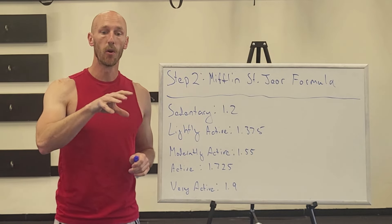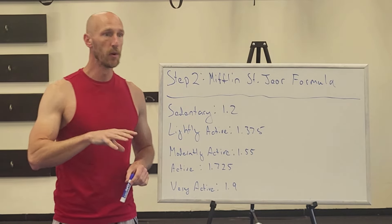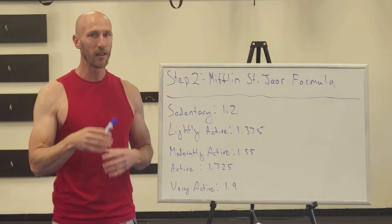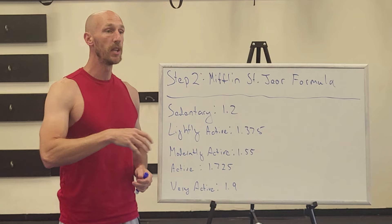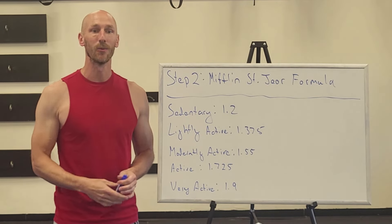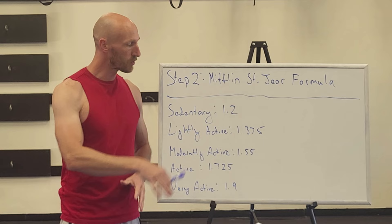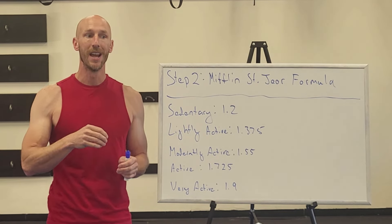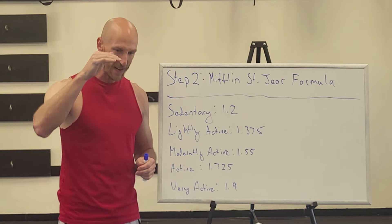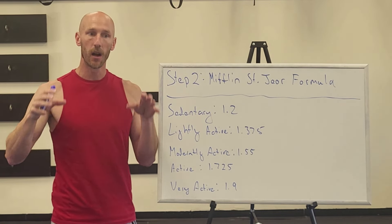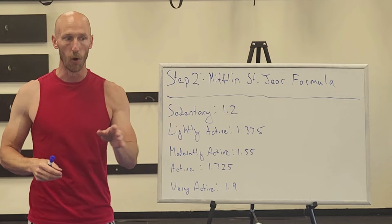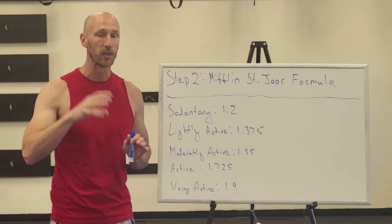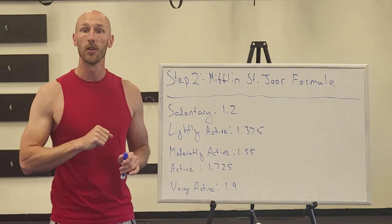We multiply that by our BMR and then we know our personal total daily energy expenditure. We're not going to burn the same amount of calories every single day, but we need at least an estimate to calculate our daily calorie deficit. So we take our total daily energy expenditure and then take 25% of that away — that is going to be our daily calorie deficit goal. I'm going to show you how to do all of that in about 30 seconds with a free online calculator.